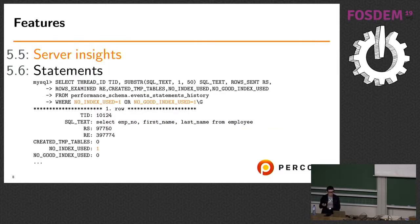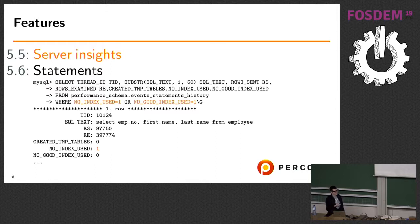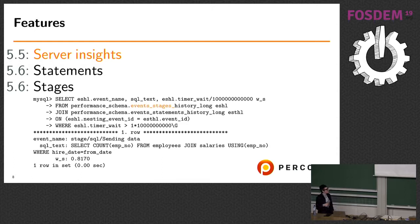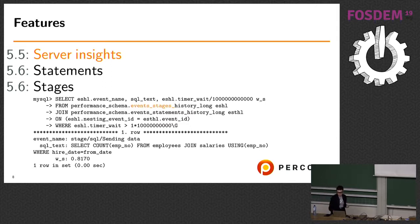Version 5.6 added statement information for runtime, so you can get good statistics on how effective or ineffective your queries are. The events_statements tables are used by many graphical tools to collect query data. Version 5.6 also added events_stages tables, which show statistics by stage — similar to what you see in SHOW PROCESSLIST. You can sort these tables and find out which stage takes the most time, then make tuning adjustments.